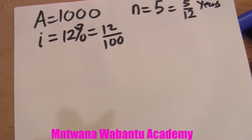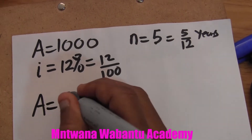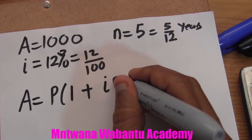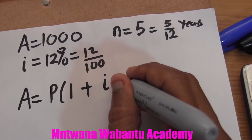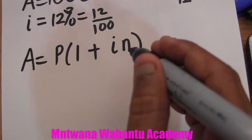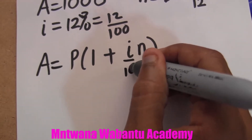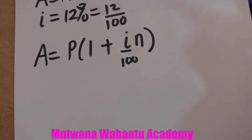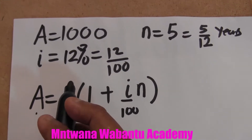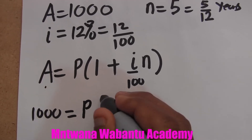This is very easy. The formula for simple interest is: Amount equals Principal times (1 plus interest rate times time). The interest rate must be over 100. So our amount, which equals 1000, goes on the left side.